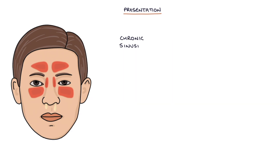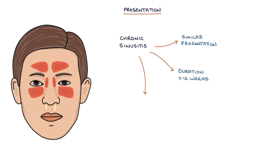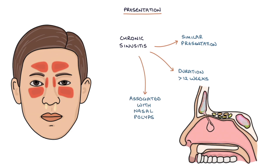Chronic sinusitis involves a similar presentation but with a duration of more than 12 weeks. It may be associated with nasal polyps, which are growths of the nasal mucosa that may be seen when looking up the nose.